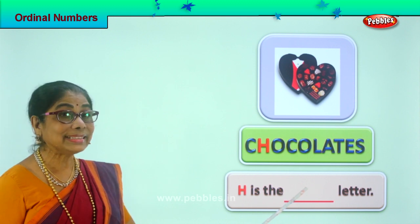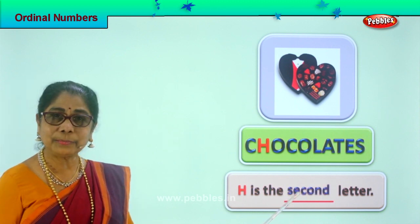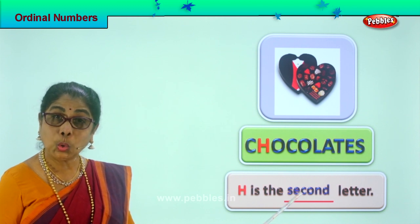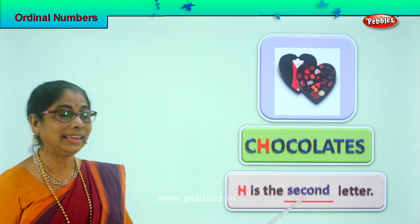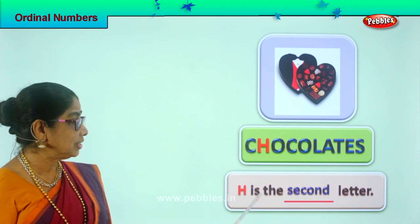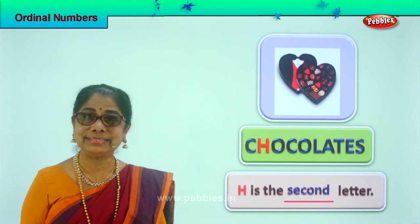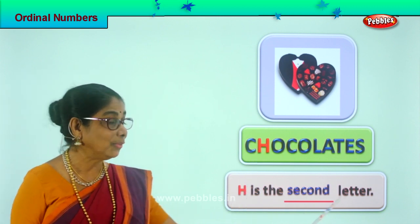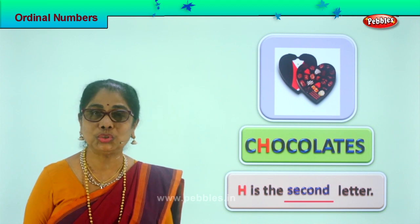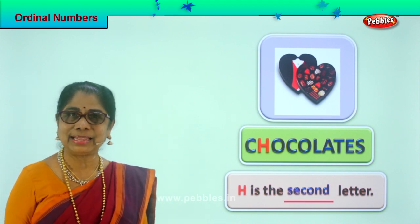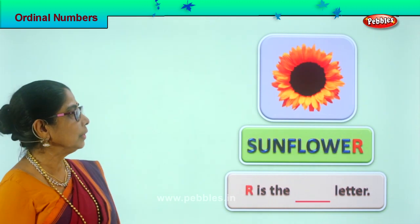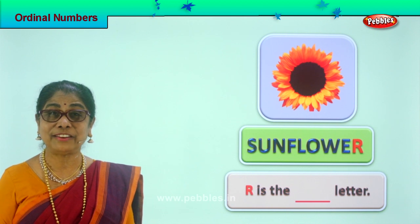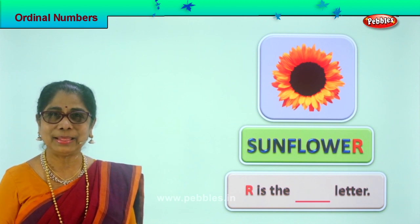What is the position of H? H is the second letter. Spell second: S-E-C-O-N-D. Second. Very good — H is the second letter. You learn to identify H as the second letter and we learn to read the full sentence.